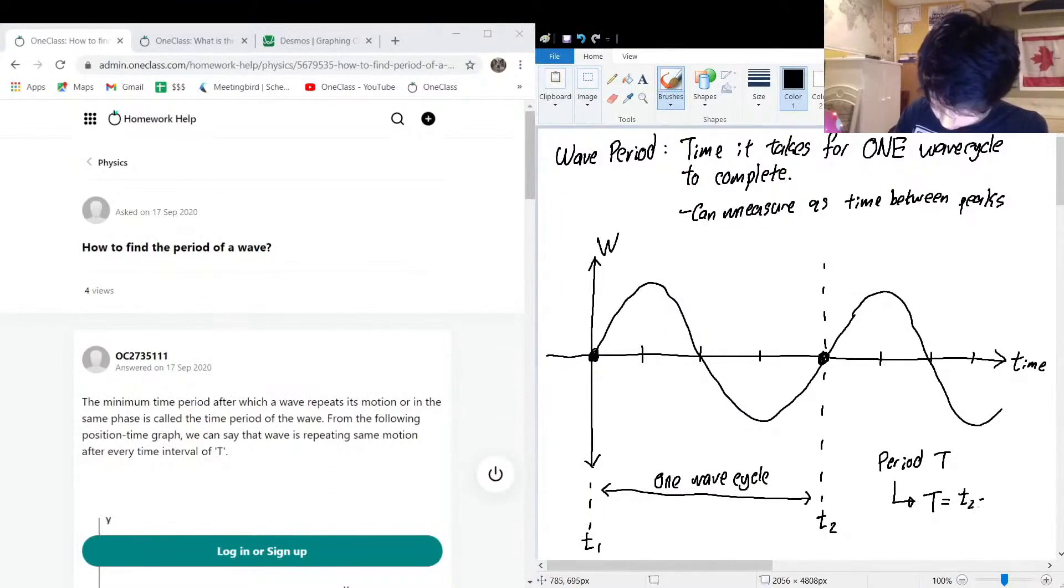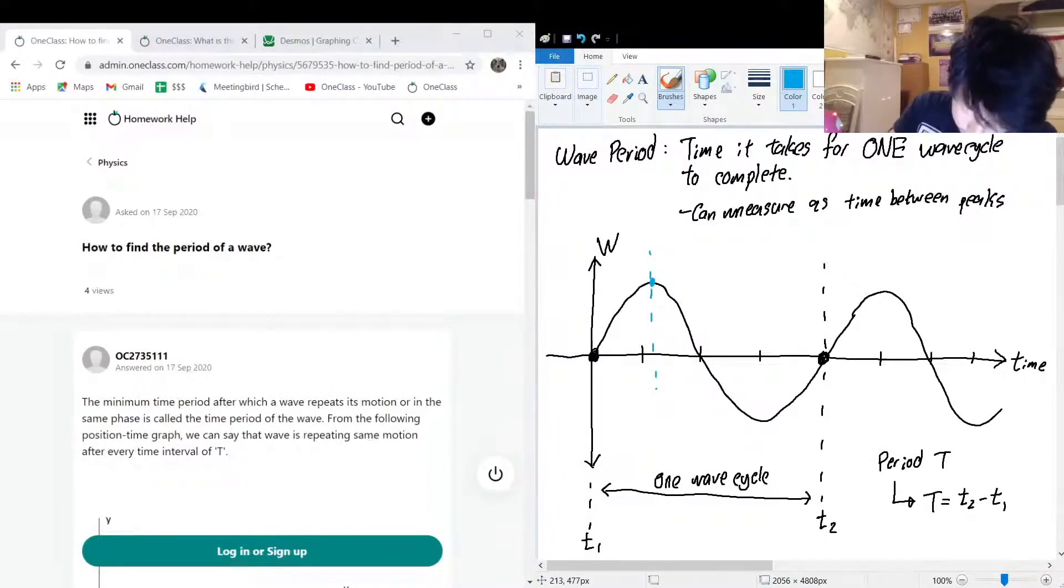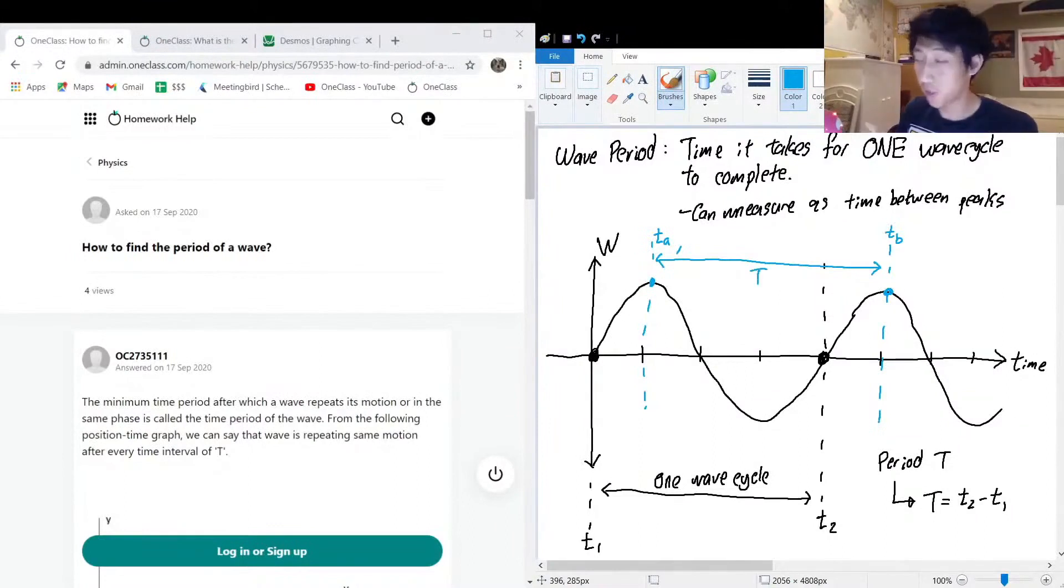Of course, t1 would be zero in this case, but we don't necessarily need t1 to be zero. If we wanted to do the distance between the peaks, this could be maybe ta and tb, and the time difference between them should also be T as well. So it doesn't matter where on the wave that you're taking the measurement for period. It just matters that you have an entire wave cycle between your time measurements. Typically people will recommend that you use the wave peaks.